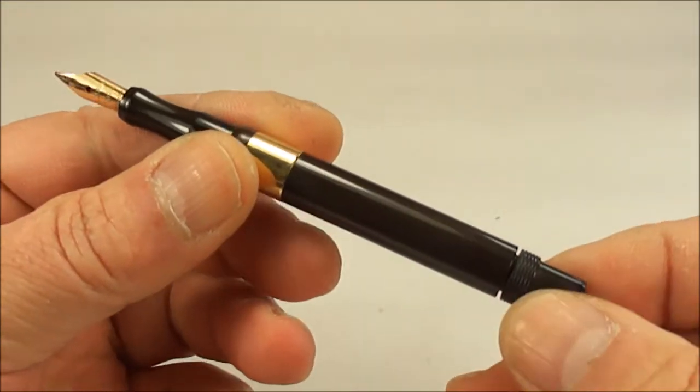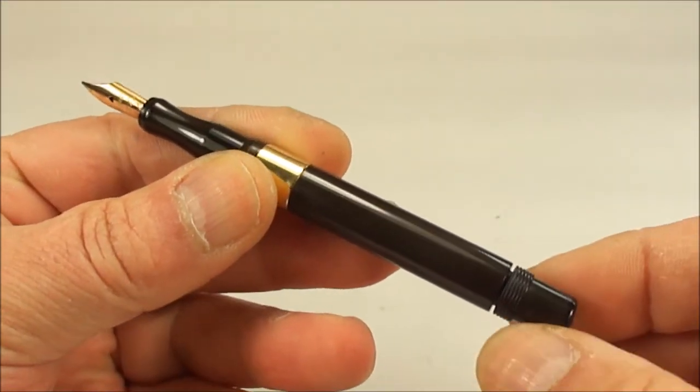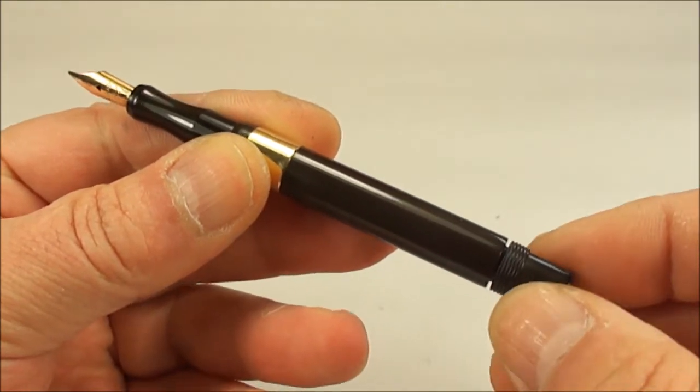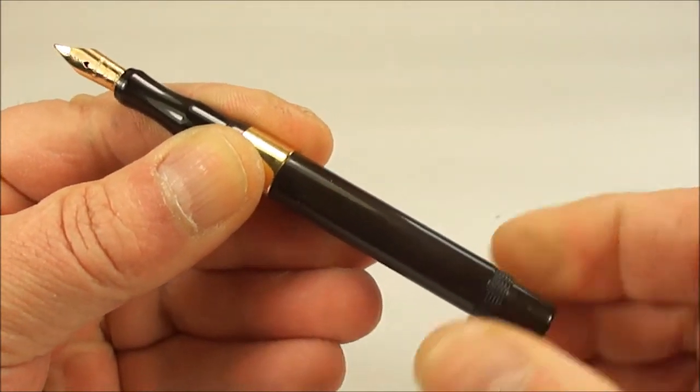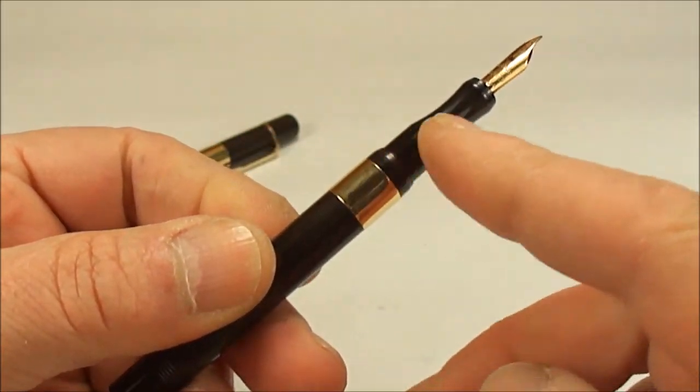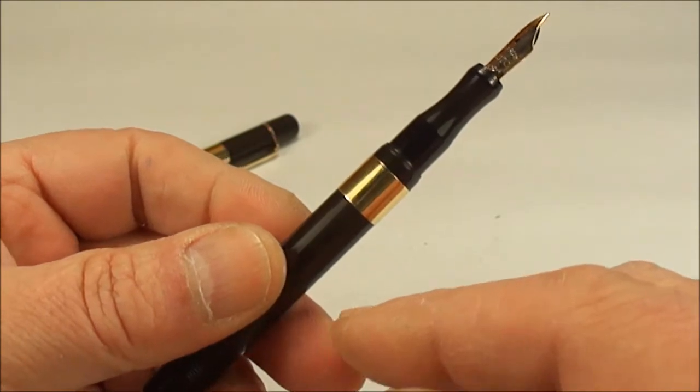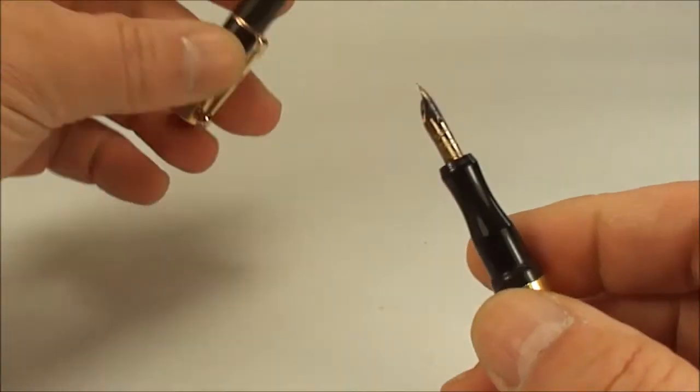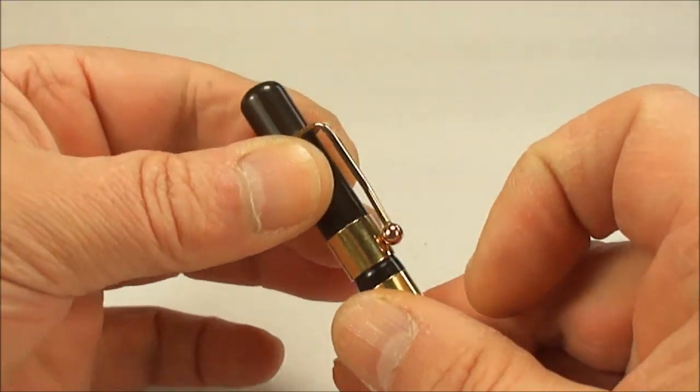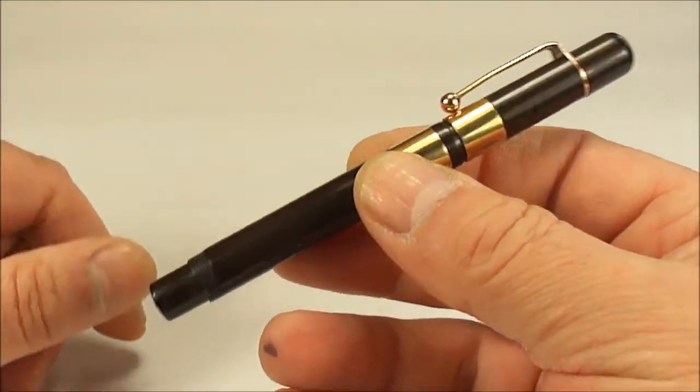And as with these pens, once you've actually finished writing and you want to pop it in your pocket or pop it down, what you need to do is screw it all the way back. That, in effect, sort of closes the ink valve inside. And then what you'd simply do is pop the cap back on and wait until it's been used the next time.